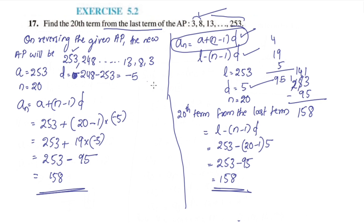If you use both methods, you get the same answer. The first method uses l minus (n minus 1) into d. The second method uses the formula a plus (n minus 1) into d on the reversed AP. Both give the 20th term from the last as 158.